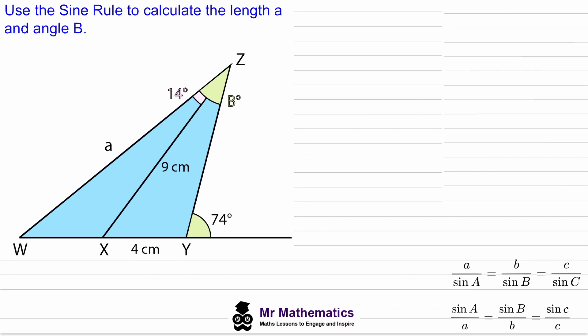Okay so we have this diagram here and we've been asked to work out angle B which is this angle here and the length W to Z which we've called length A. So we're going to work these two out.